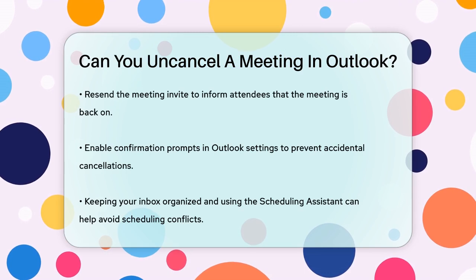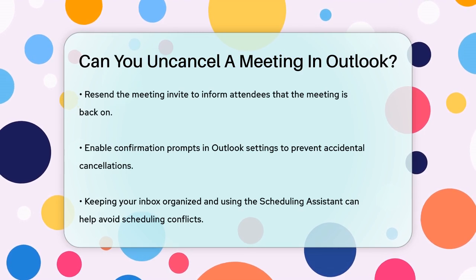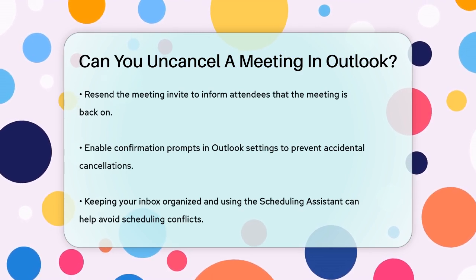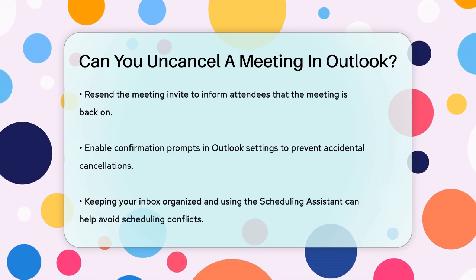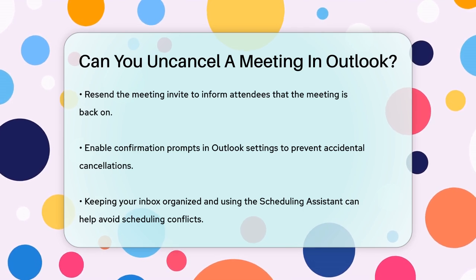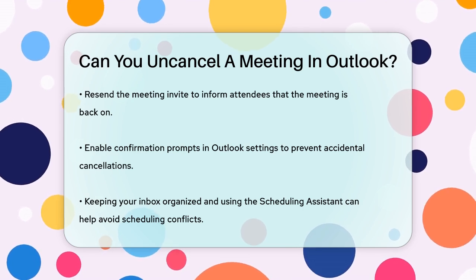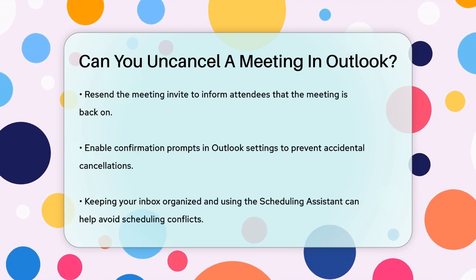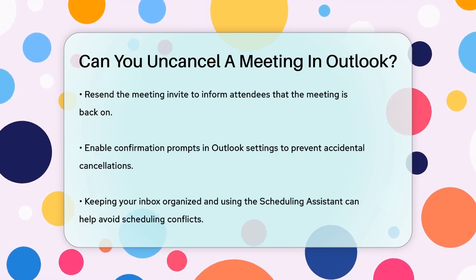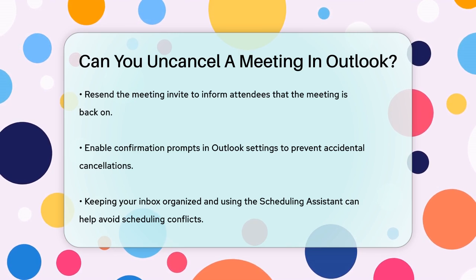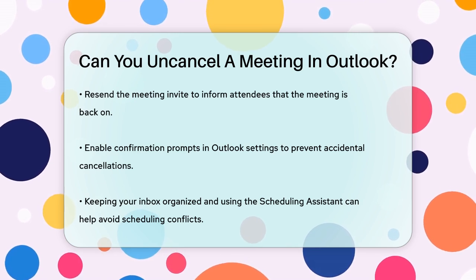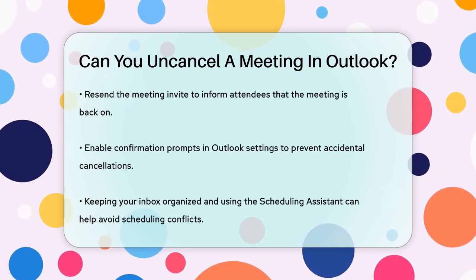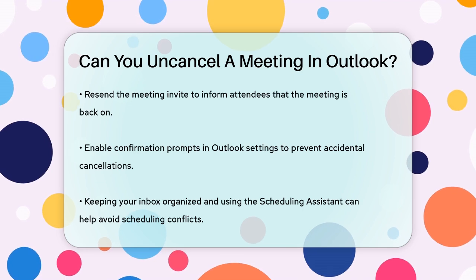Additionally, keeping your inbox organized and using features like the Scheduling Assistant can help prevent scheduling conflicts and reduce the need to cancel meetings. So, to answer your question, yes, you can uncancel a meeting in Outlook by retrieving it from the Deleted Items folder and moving it back to your calendar. This simple process can save you a lot of hassle and ensure your meetings stay on track.